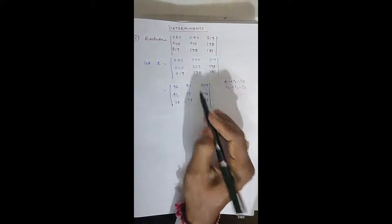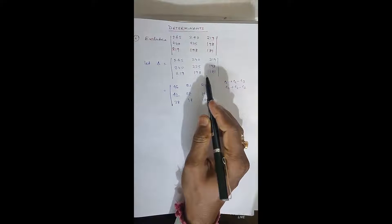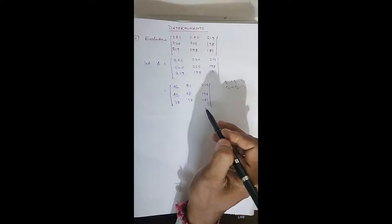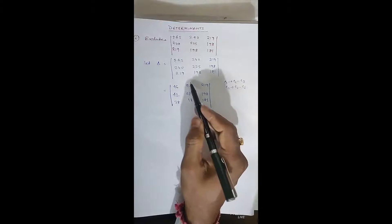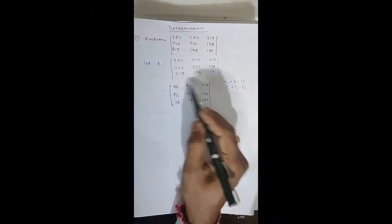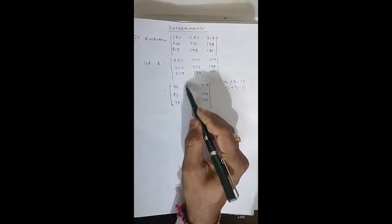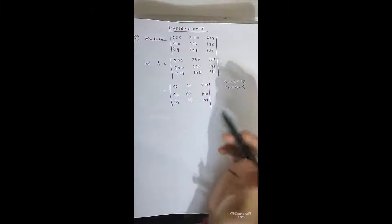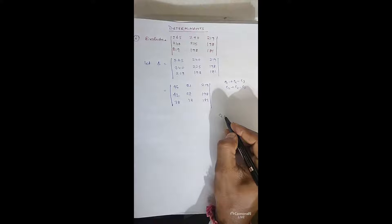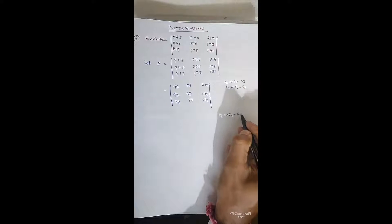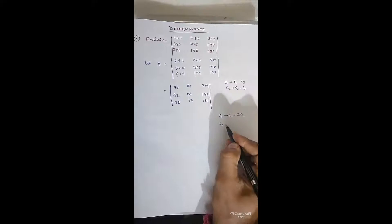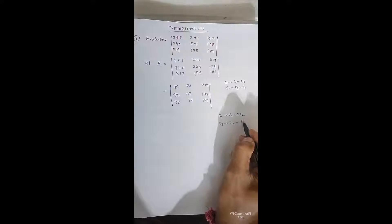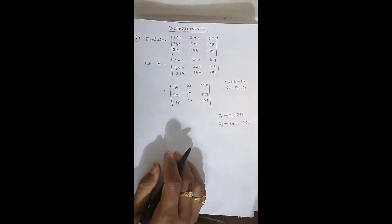Column 3 is still very large, so we have to simplify further. Column 2's elements are smaller than those of columns 1 and 3, so we will use column 2. We change C1 to C1 minus 2·C2, and C3 to C3 minus 10·C2.